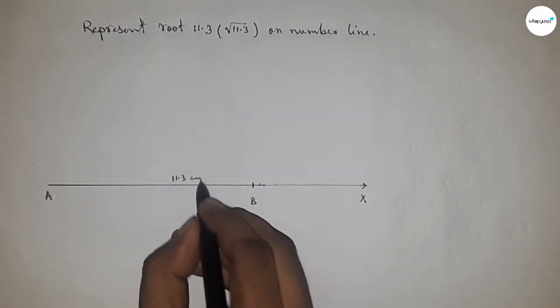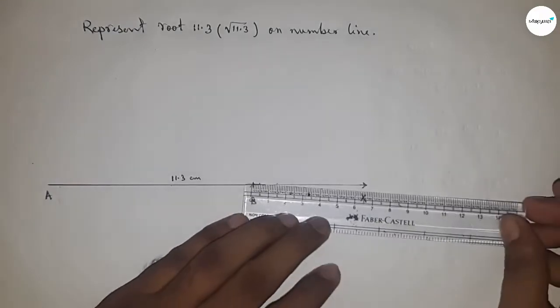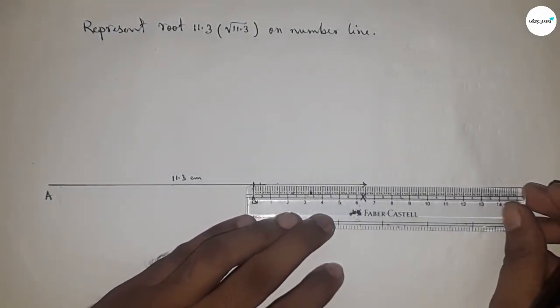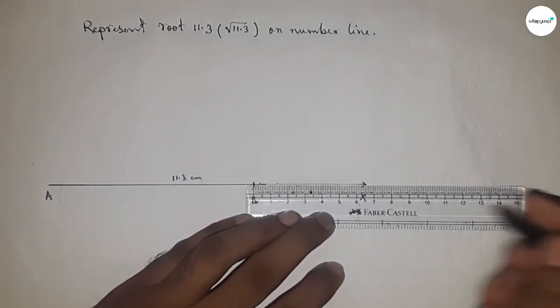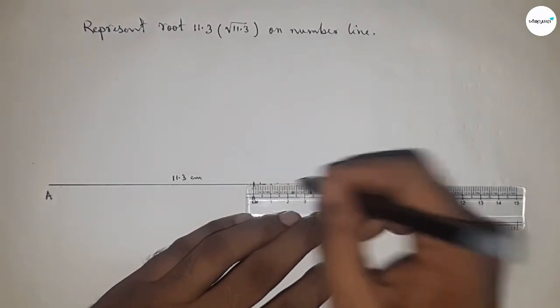Next, marking the numbers on the line from B to X by using scale.